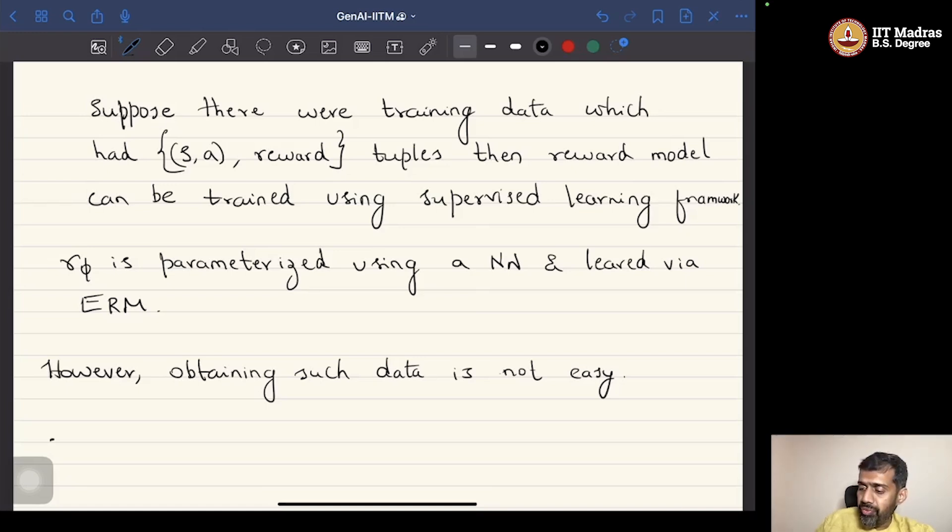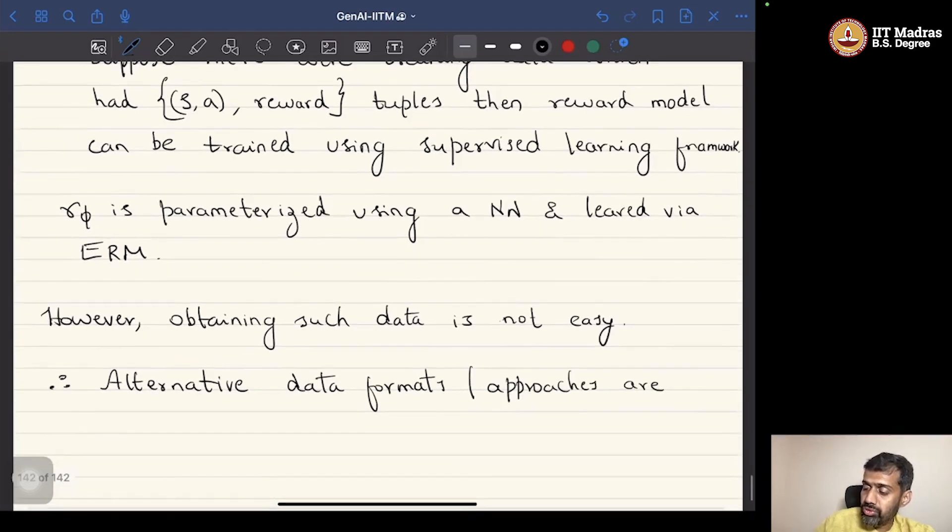Therefore, alternative approaches for reward model training are sought after - alternative data formats or approaches are sought. So, to solve this problem people have thought of obtaining different kinds of data and different sort of models for reward model training.